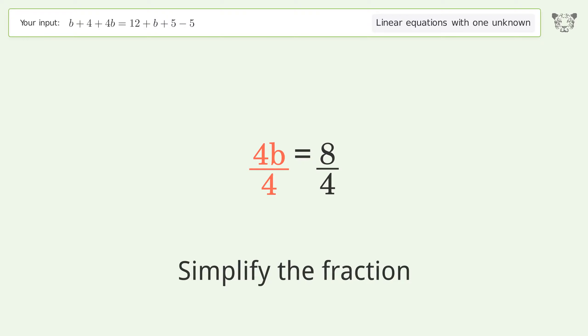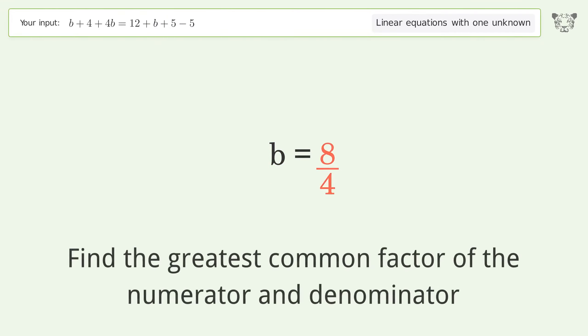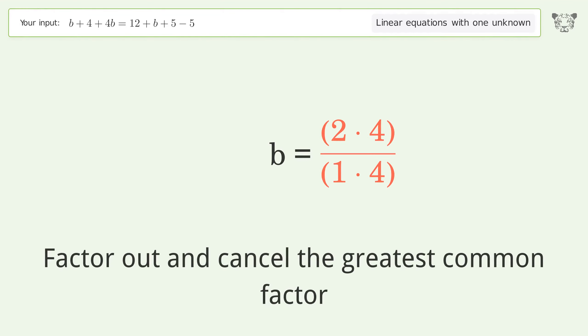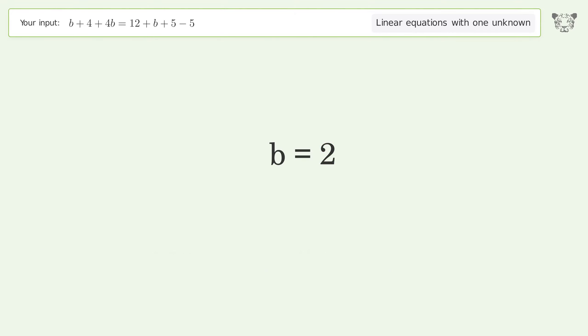Simplify the fraction. Find the greatest common factor of the numerator and denominator. Factor out and cancel the greatest common factor. The final result is b equals 2.